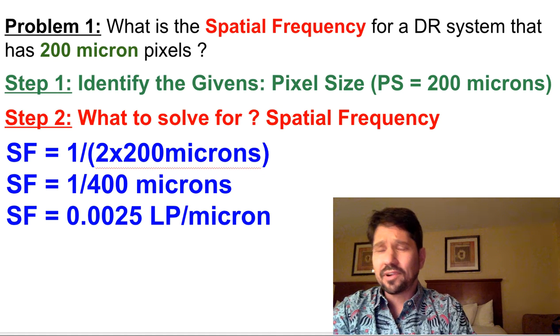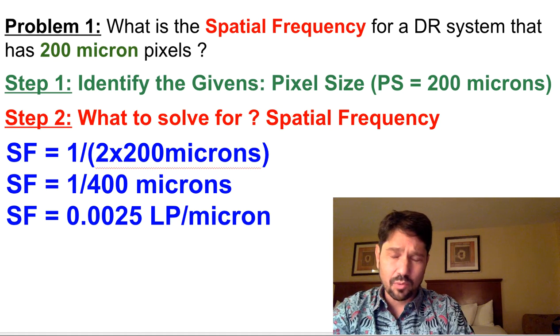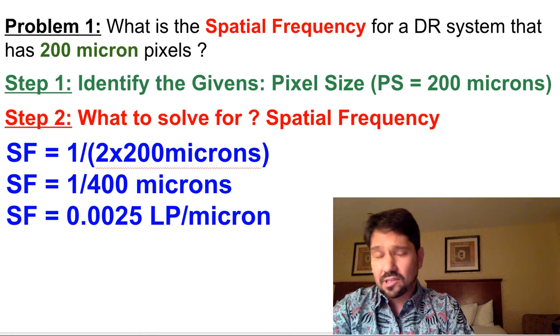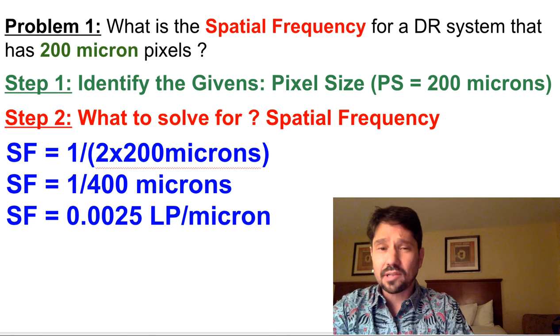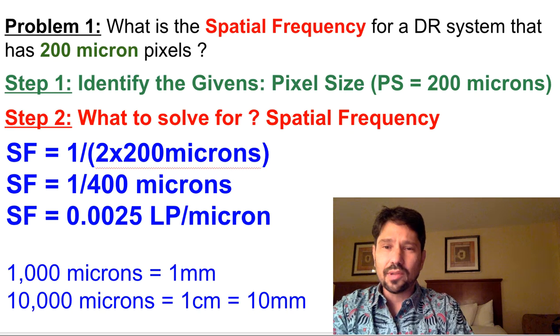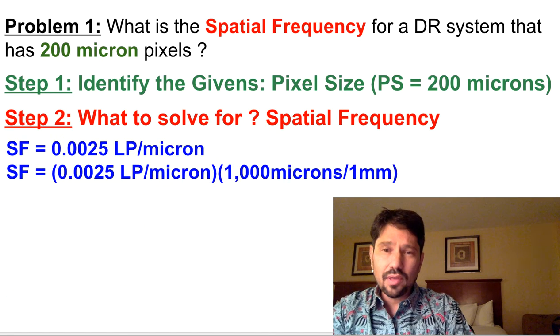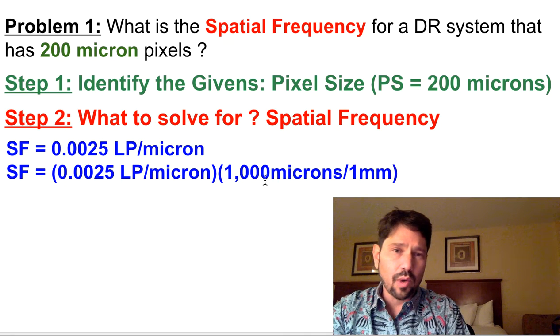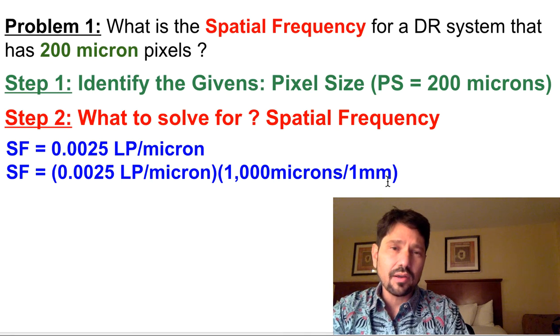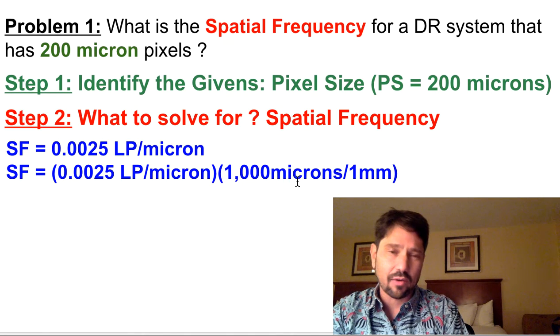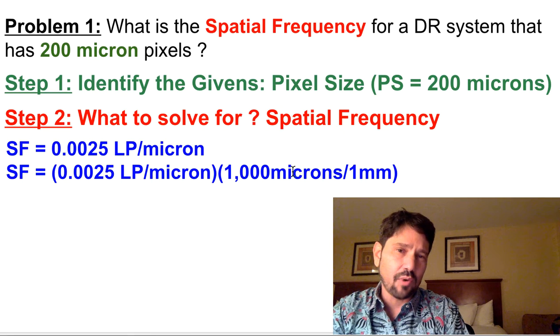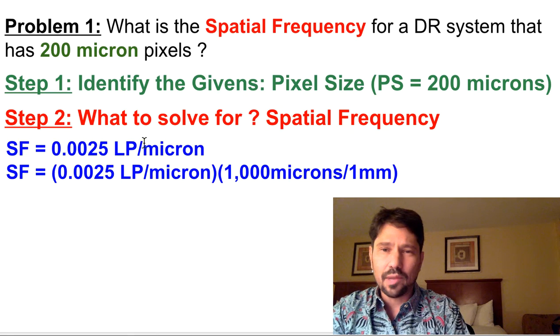But they're never going to want line pairs per micron. We're always going to want line pairs per centimeter, or perhaps line pairs per millimeter. So we'll need to convert, and we'll need to know those conversion factors. So if we've got line pairs per microns, as shown, we'll want to put microns in the numerator and 1 millimeter in the denominator, so the microns will cancel out. And this is a ratio of 1, 1,000 microns to 1 millimeter.